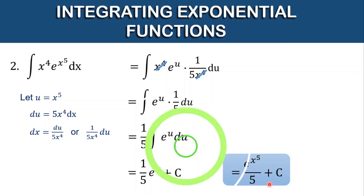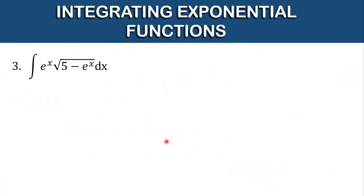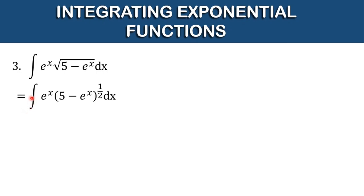For example 3, find the antiderivative of e raised to x times the square root of the quantity 5 minus e raised to x dx. First, convert the square root to exponential form: the antiderivative of e raised to x times the quantity 5 minus e raised to x, raised to 1 half, dx.